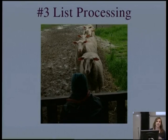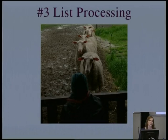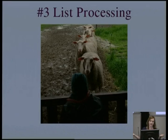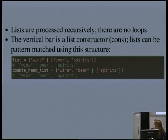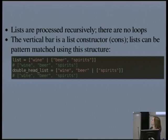The next thing I want to look at is list processing. This harks back to one of the oldest programming languages — Lisp, named after list processing. Lists have a natural recursive definition: a list is either an empty list, or an element constructed onto the tail of the list. These are sometimes called cons lists or cons cell lists. In Elixir you can match on lists using this pattern. The vertical bar is the list constructor or cons function. You can build a list by saying wine cons'd onto the list of beer and spirits to get the list wine, beer, spirits. Unlike some other languages, you can also put two elements before the bar.